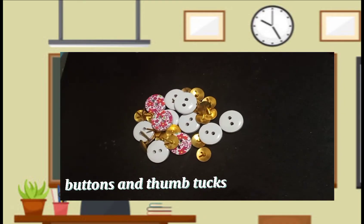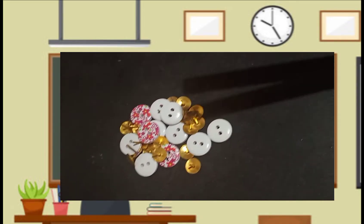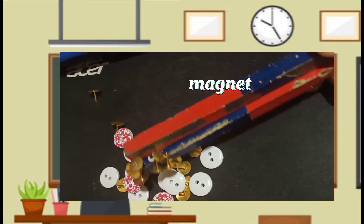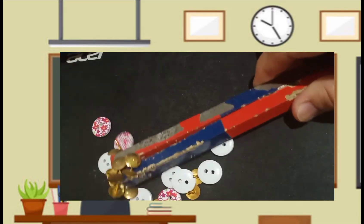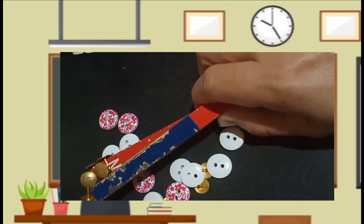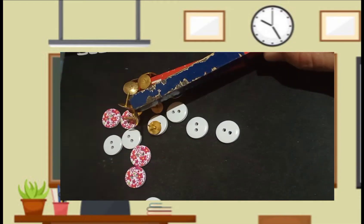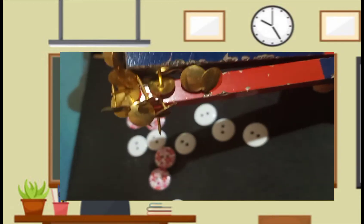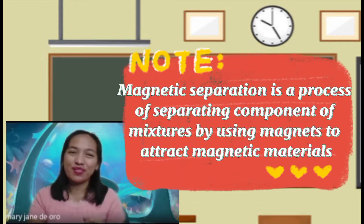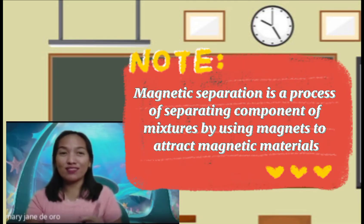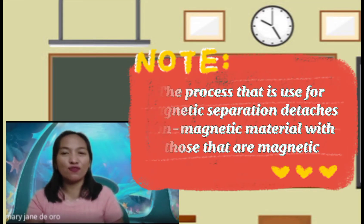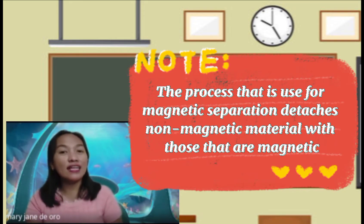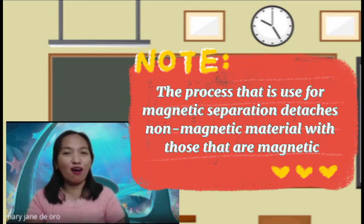Here we have buttons and thumbtacks, and we are going to use magnets to separate the thumbtacks from these. Using the magnet to separate the thumbtacks. Magnetic separation is the process of separating components of mixtures by using magnets to attract magnetic materials. The process detaches non-magnetic material from those that are magnetic.